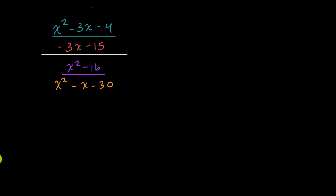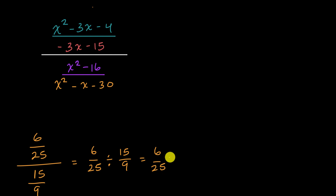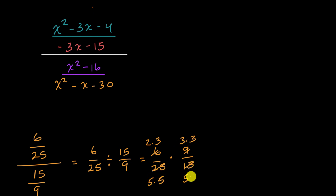This is completely analogous to dividing fractions. So if we were to divide the fraction six over 25 by the fraction 15 over nine, we know that we can rewrite this as six over 25 times nine over 15. And then we can factor the various numerators and denominators. This is two times three, this is three times three, this is five times five, this is five times three.